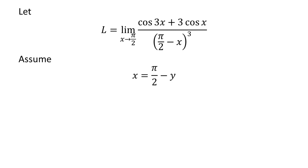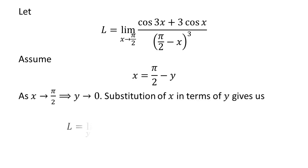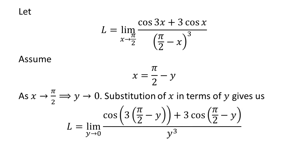Now, let us assume x is equal to π/2 minus y. This implies as x approaches π/2, then y approaches 0. Substitution of x in terms of y gives us: L is equal to the limit of cosine of 3(π/2 minus y) plus 3 times cosine of (π/2 minus y) upon cube of y as y approaches 0.